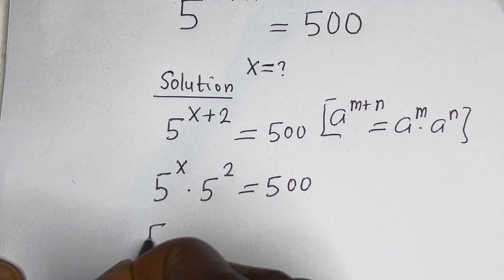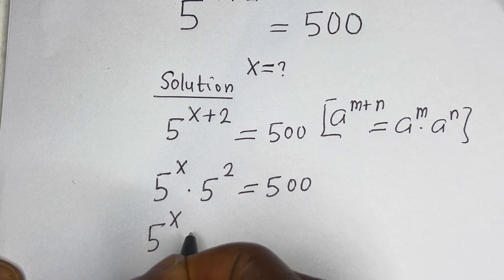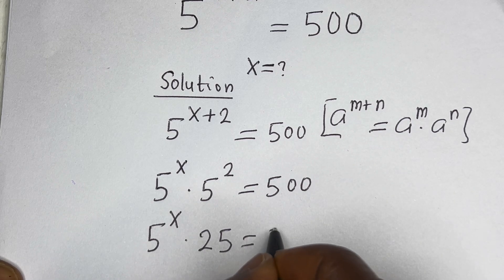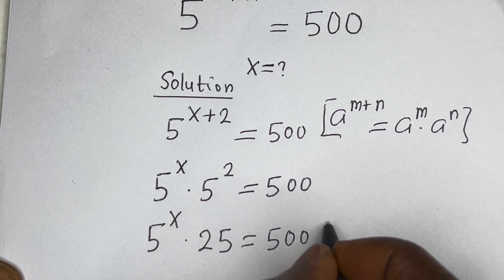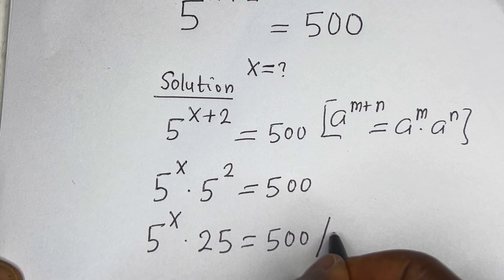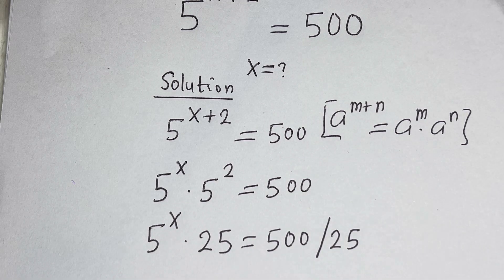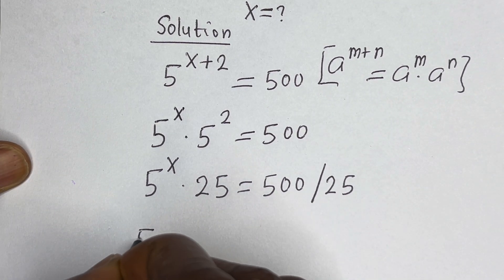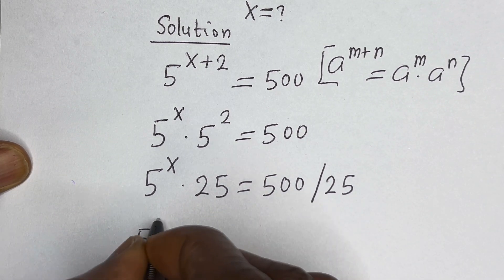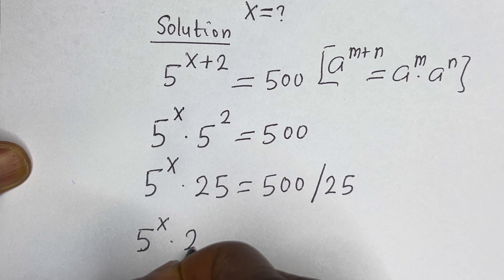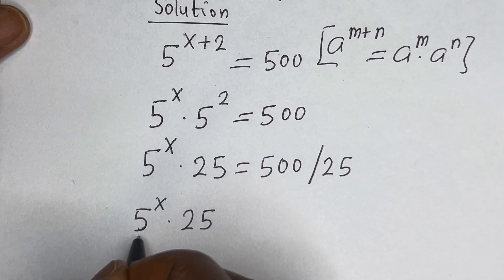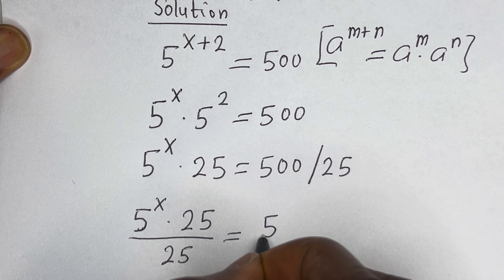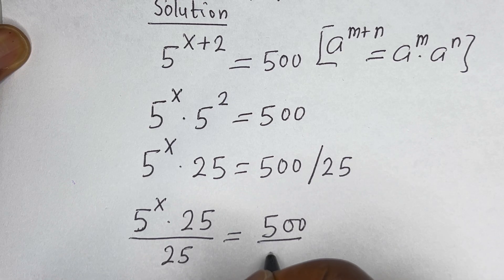Here we have 5 raised to power s multiplied by 5 raised to power 2, that is 25, is equal to 500. Let us divide all through by 25. Then this becomes 5 raised to power s multiplied by 25 divided by 25 is equal to 500 divided by 25.